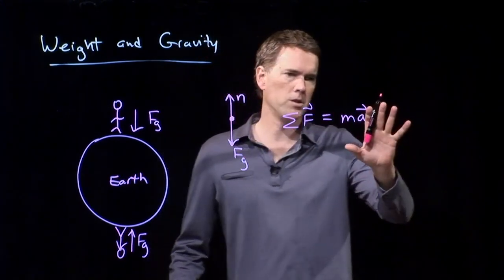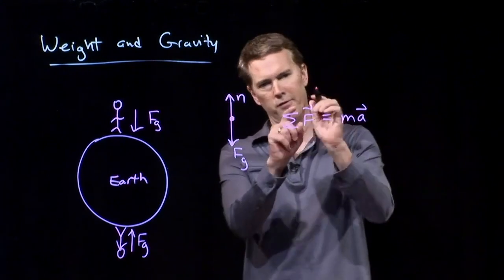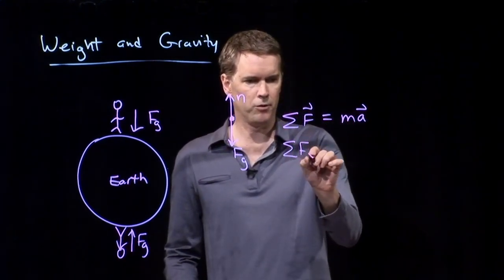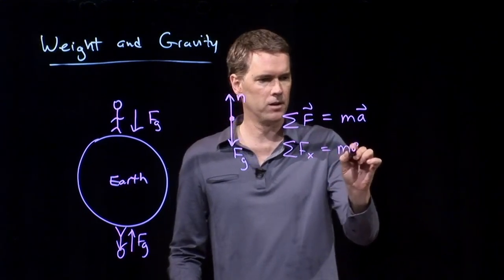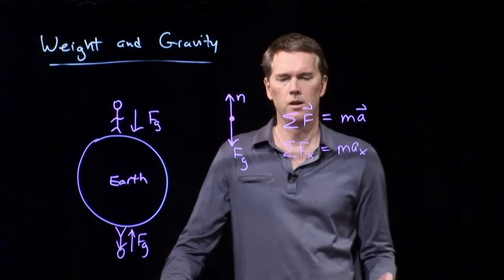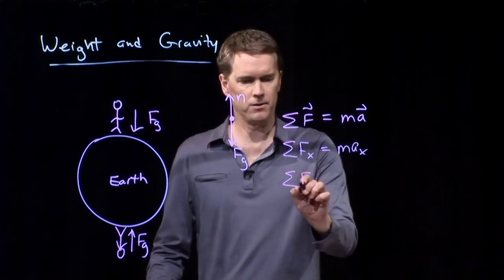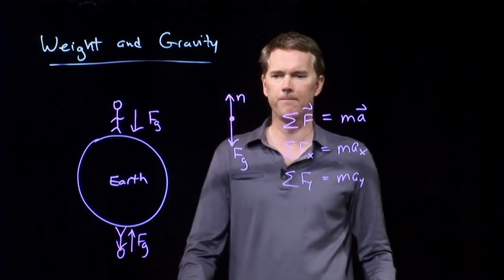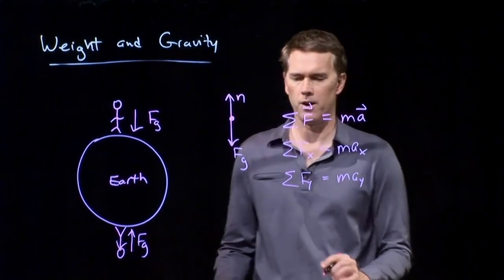Whenever you write down this equation, you have a vector there, you have a vector there. I can break it up into components. So sum of the forces in the x direction is equal to the mass times the acceleration in the x direction. Sum of the forces in the y direction is equal to mass times the acceleration in the y direction. And now we just identify what those forces are.